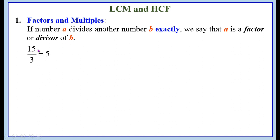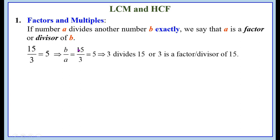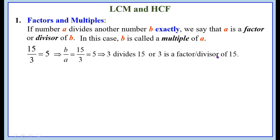For example, when 15 is divided by 3, we get 5. Here the remainder is 0 and the quotient is 5. If we take B equals to 15 and A equals to 3, then 3 divides 15 exactly. In this case, we say that 3 divides 15, or 3 is a factor of 15, or 3 is a divisor of 15. We call B as a multiple of A.